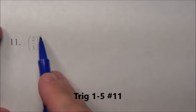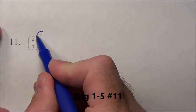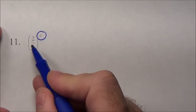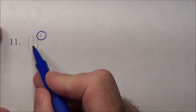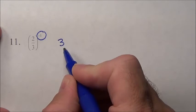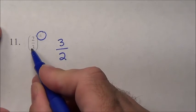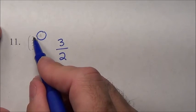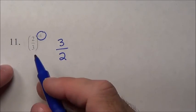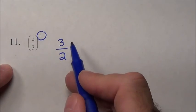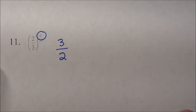Problem 11 has 2/3 to the negative 1 power. Remember, a negative 1 simply means the reciprocal of this. So what's the reciprocal of 2/3? We simply flip it — the denominator goes to the numerator, and the numerator goes to the denominator. So for number 11, the answer is simply 3 over 2.